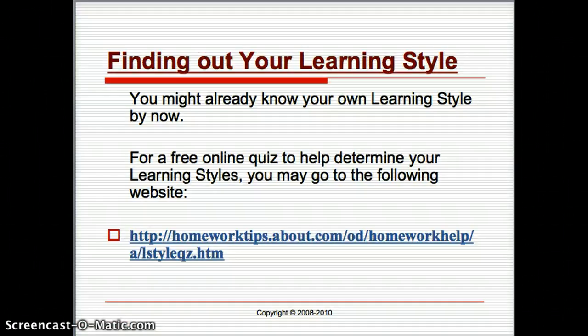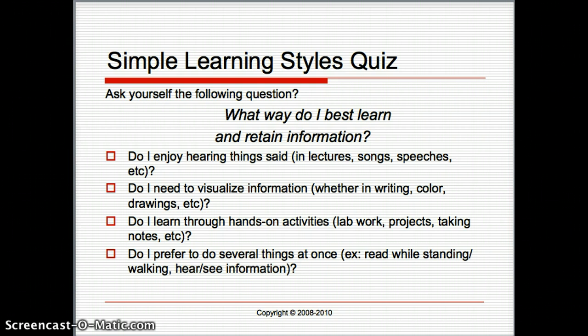To find out what type of learner you are, you can take a free quiz online at about.com — type 'free learning style quiz' in the search engine and it will pop up. You can also click a link to take it. Another way is to ask yourself: Do you enjoy hearing things said? If so, you're an auditory learner. Do you need to visualize information and write it down? You're a visual learner. Do you enjoy hands-on activities? You're a kinesthetic learner. And if you prefer doing several things at once or don't fit any of those categories, you're a tactile or combination learner.